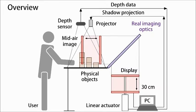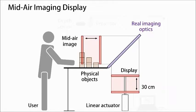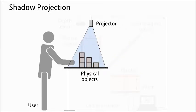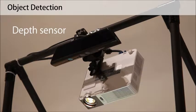MARIO system has three main functions: object detection, mid-air imaging display, and shadow projection. The shapes and positions of physical objects on a table are detected with a depth sensor.